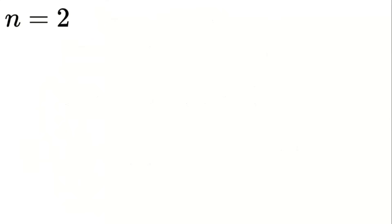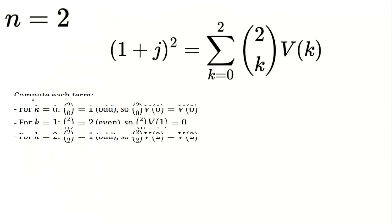To verify this let's expand 1 plus j squared using the binomial theorem. We sum up n choose k multiplied by V of k for k from 0 to 2. Now we calculate each term. When k is 0 the binomial coefficient 2 choose 0 equals 1 which is odd so we keep V of 0. When k is 1 the binomial coefficient 2 choose 1 equals 2 which is even so this term disappears. When k is 2 the binomial coefficient 2 choose 2 equals 1 which is odd so we keep V of 2.